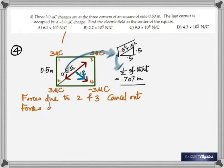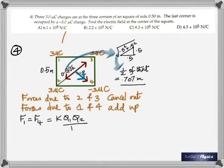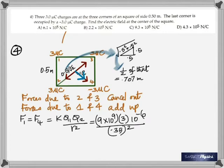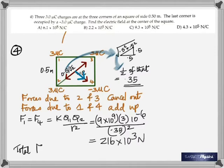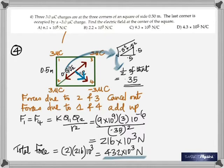So forces due to charges two and three cancel out, while forces due to charges one and four add up — they are equal in magnitude. Using F = k·q₁·q₂ / r², with q = 3 micro coulomb and distance r = 0.35 m, the total force is 2 × 216 × 10³, which equals 432 × 10³ newtons as the net electric field magnitude.